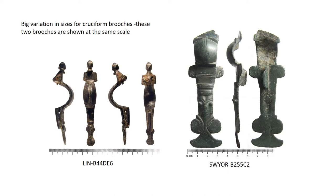It can be difficult to describe the shapes of catch plates, so make sure you orient your viewer. If you have a complete or near complete catch plate, it's important to explain which way it's curved to hold the end of a pin. We might say something like: 'when looking at the reverse of the brooch with head plate uppermost, the catch plate is curled over to the observer's left.' The vast majority of catch plates on any brooch go to the left when looking at the reverse, so it's worth flagging up any that go to the right.